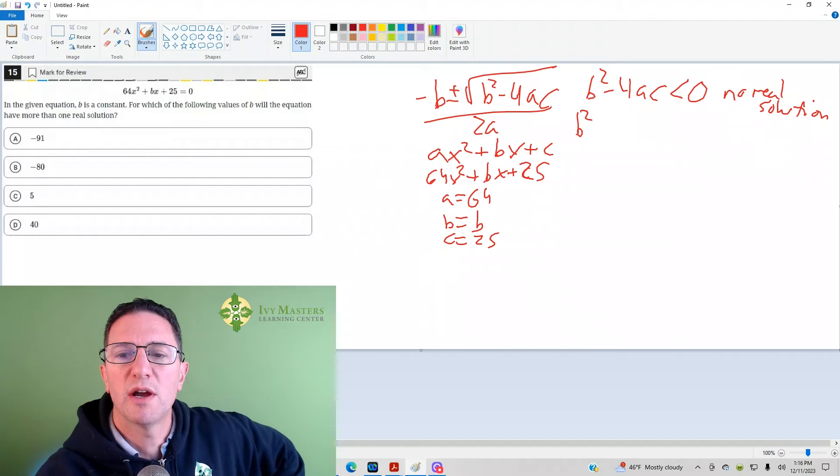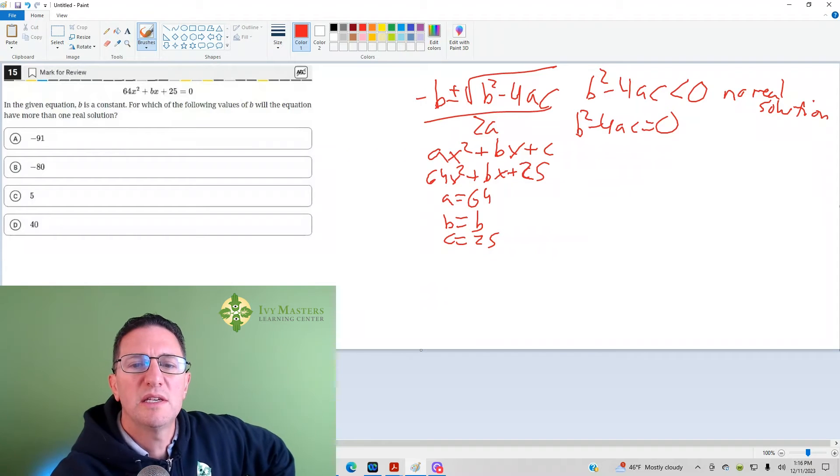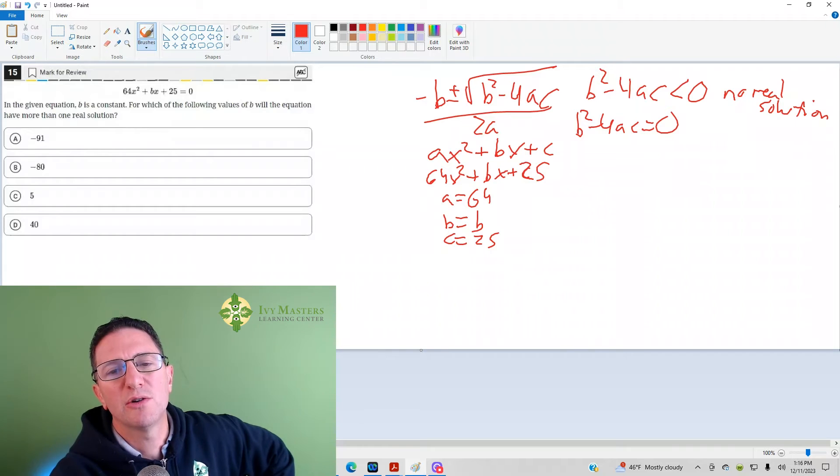Let's say b squared minus 4ac equals 0. The square root of 0 is 0. And you see I've got that plus minus there with the quadratic formula. If you take any value and add 0 to it, take that same value subtract 0 from it, you get the same value twice. So this is one solution.